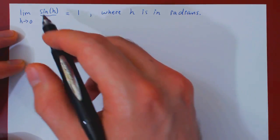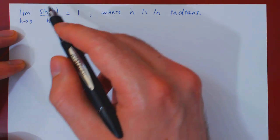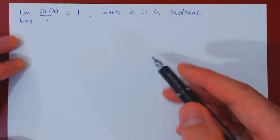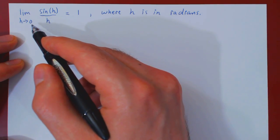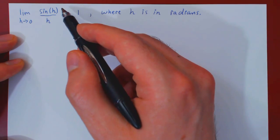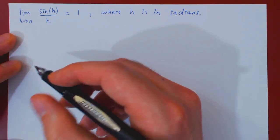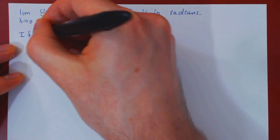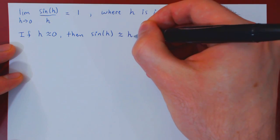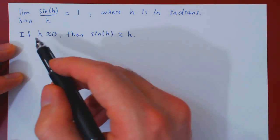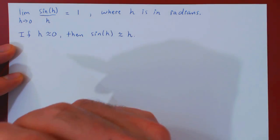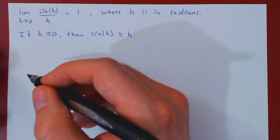In this video, we will give a beautiful proof of the following limit: the limit as h approaches 0 of sine of h over h is equal to 1, and a key fact is that h must be in radians. Intuitively, as h gets closer and closer to 0, the ratio sine of h over h gets closer and closer to 1, which means sine of h gets closer and closer to h. In our proof, we will assume h is positive and very small; the argument is exactly the same if h were negative.